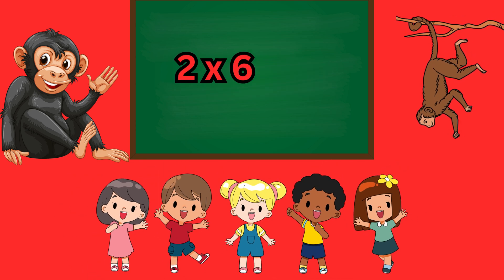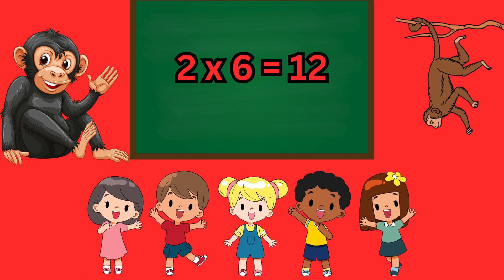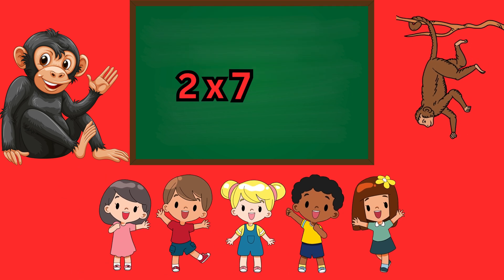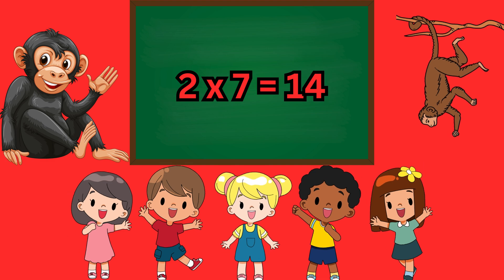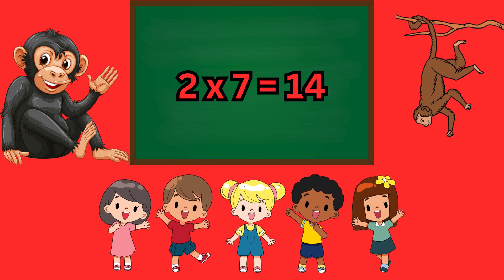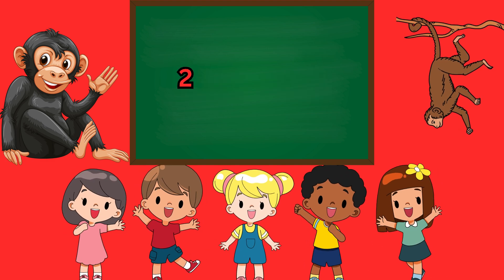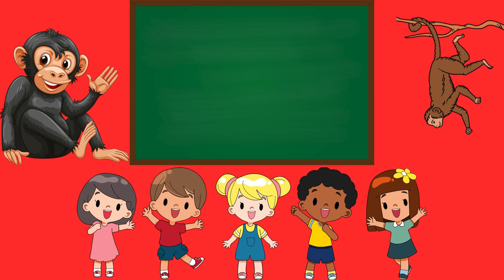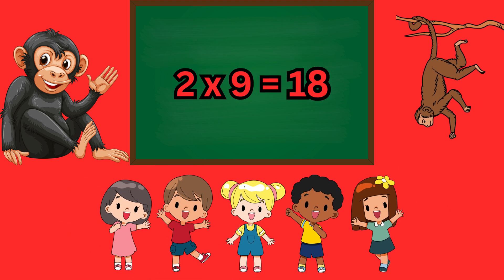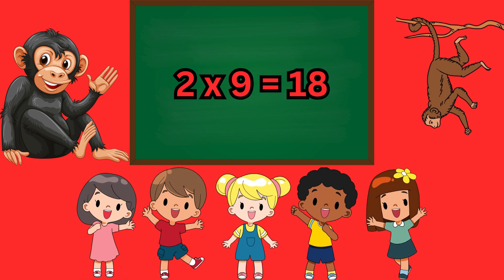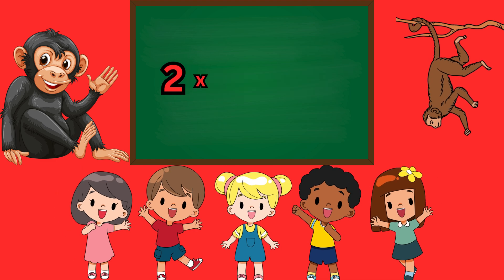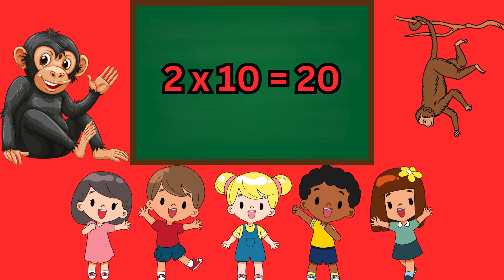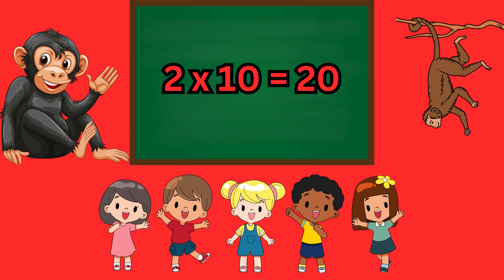Two sixes are twelve, two sevens are fourteen, two eights are sixteen, two nines are eighteen, two tens are twenty.